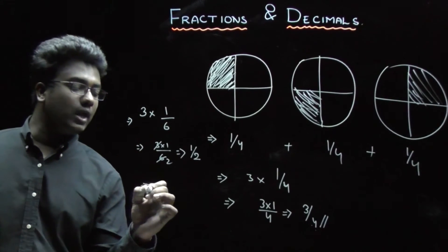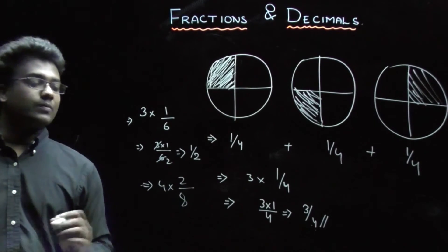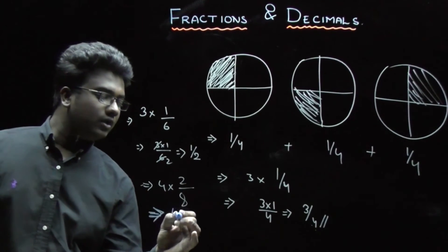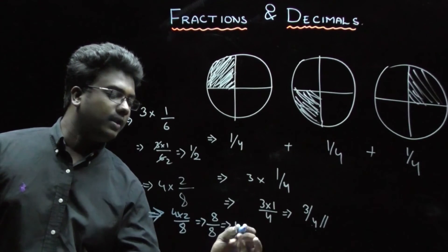Now, what can be the value when 4 is multiplied with 2 by 8? What can be the value? It will be 4 into 2 by 8, which is 8 divided by 8, which is 1.